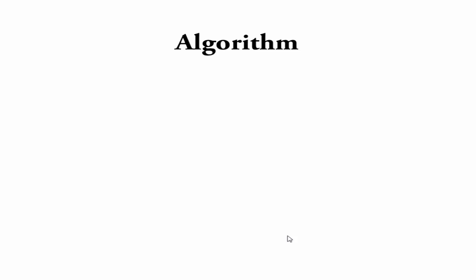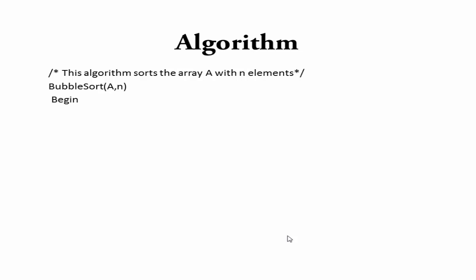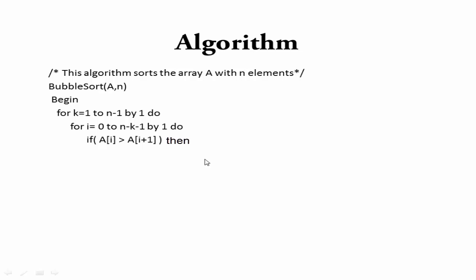Next, we write the algorithm for bubble sort. This algorithm sorts an array 'a' with n elements. To sort n elements, we need n minus 1 passes. We write an outer loop that runs from 1 to n minus 1. In each pass, we compare the element at the ith position with the element at position i+1 using an inner loop from i=0 to n minus k minus 1. If the ith element is greater than the (i+1)th element, we swap them using a temporary variable: temp = a[i], a[i] = a[i+1], a[i+1] = temp. Then the inner loop ends and the outer loop ends.